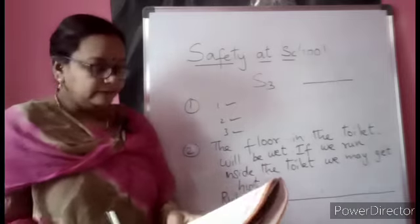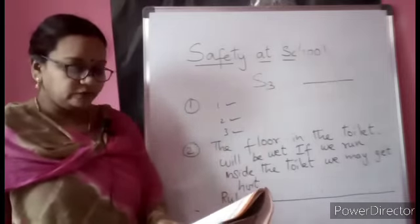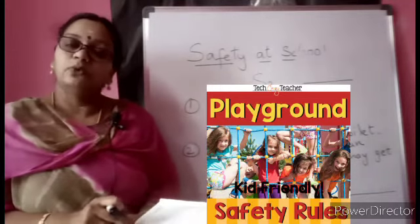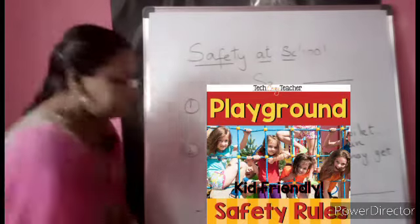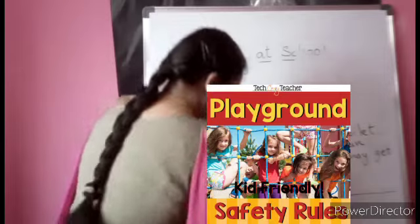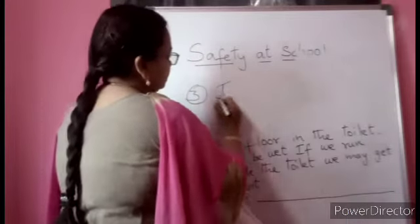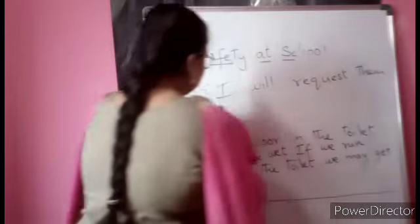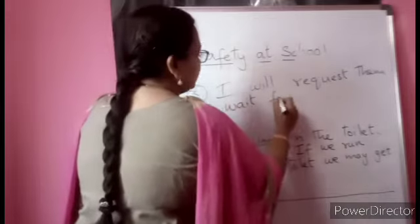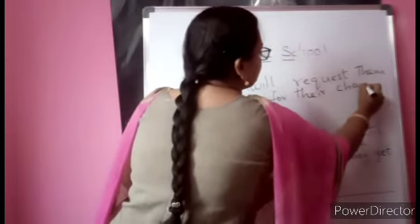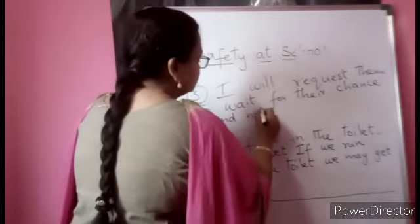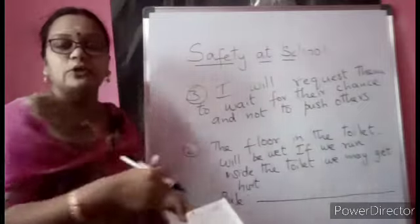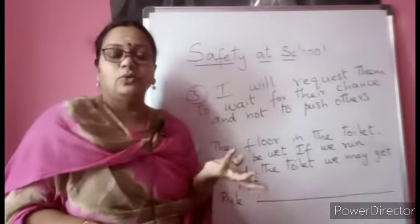Third question: You see some children trying to get ahead of other children on the slide by pushing. What will you do? Ask them to wait for their chance and do not push others. You can request them to wait for their chance and not to push others. I will request them to wait for their chance and not to push others. If you request them or bring it to the notice of adults, they will take care. The children who are playing there may get hurt.